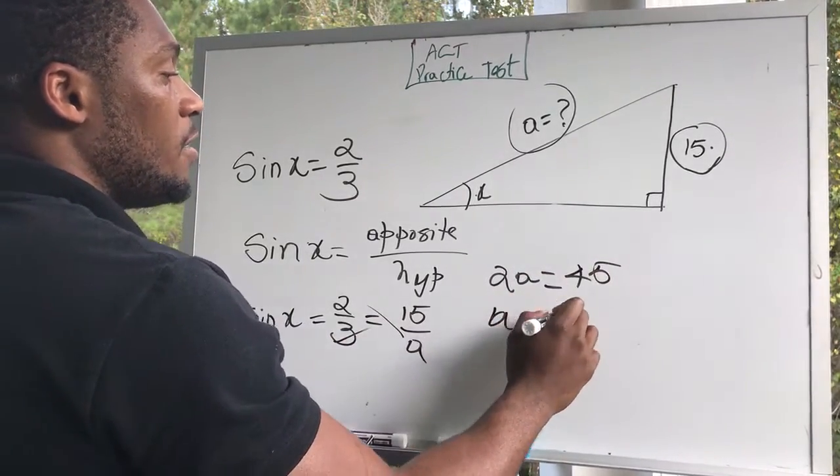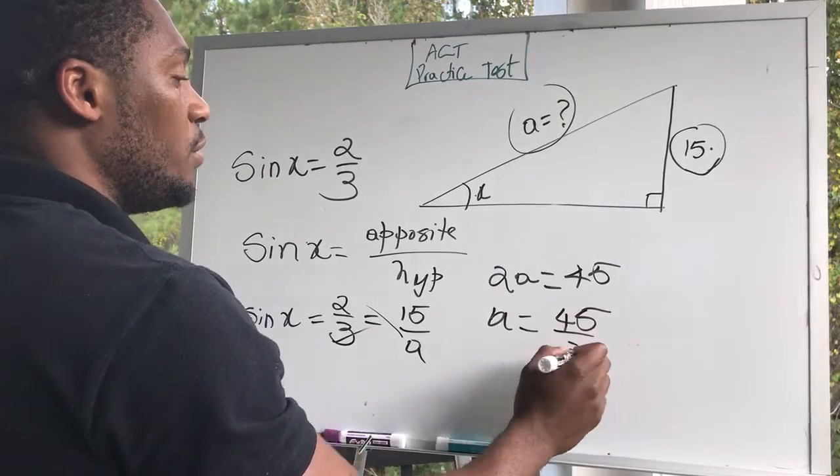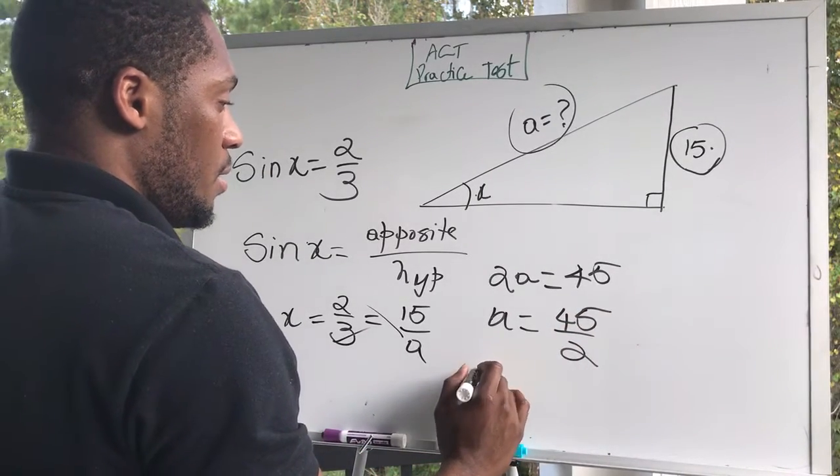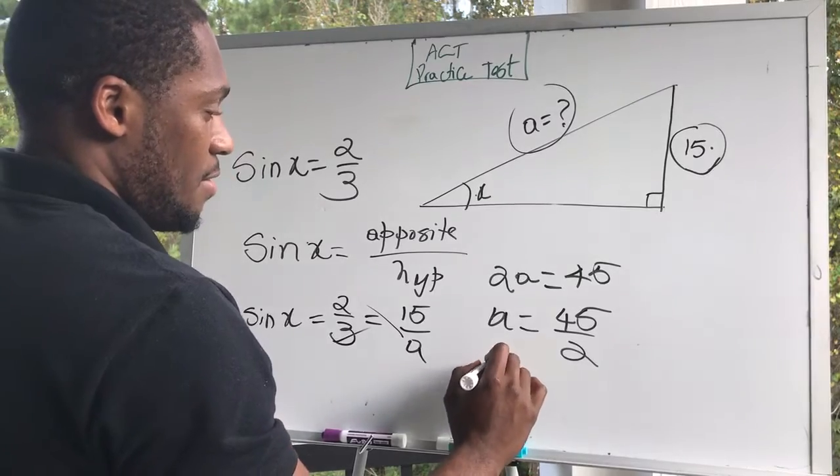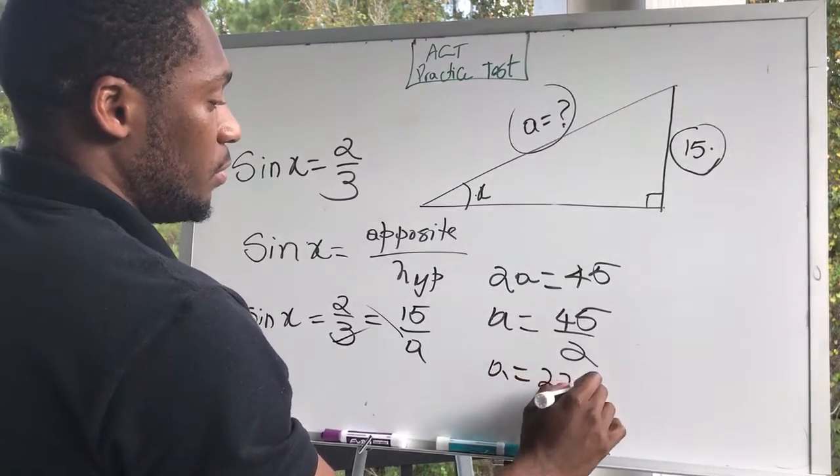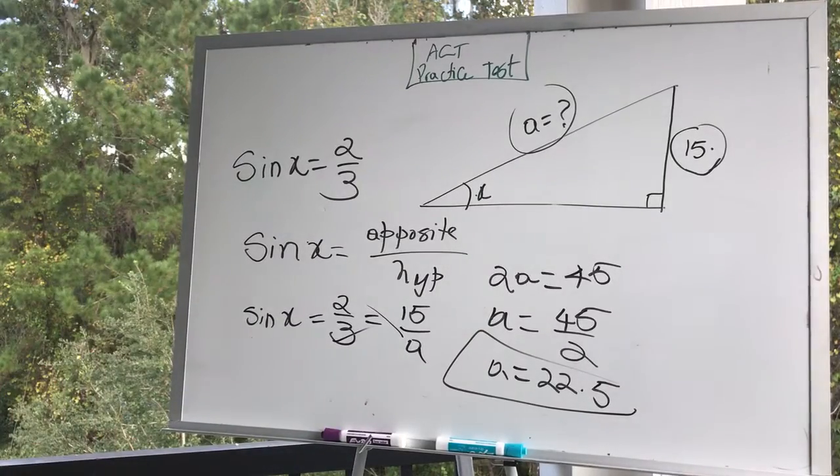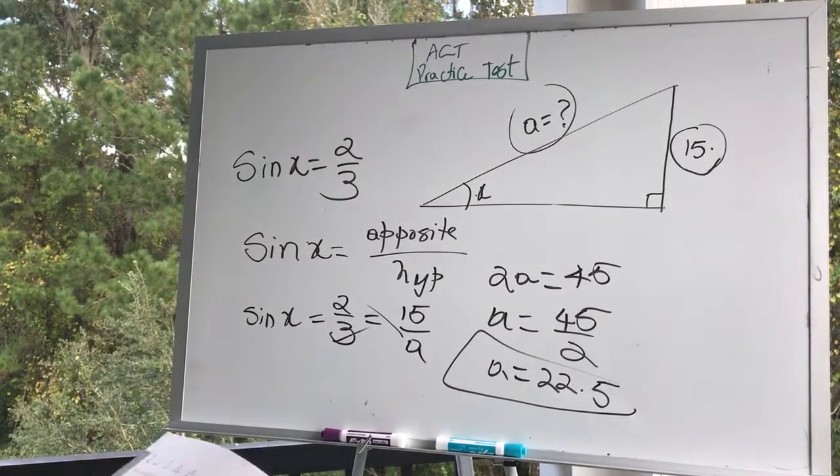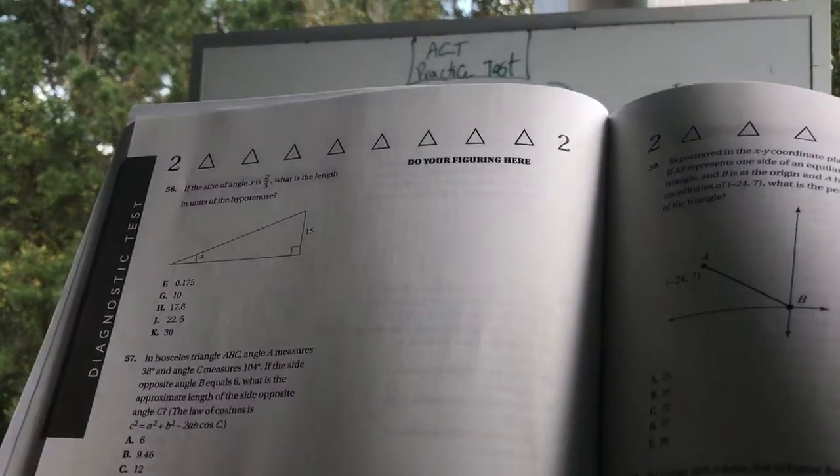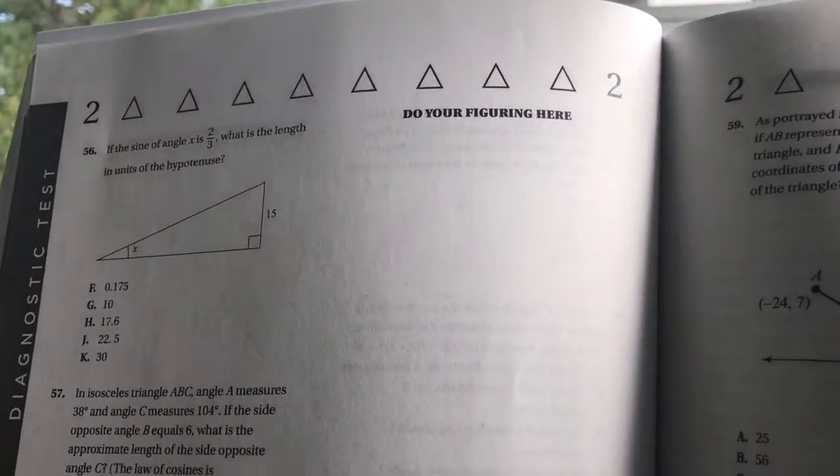A is equal to 45 over 2, which is 22.5. A is equal to 22.5. Let's see if we have this in the answer choices. It is choice J.